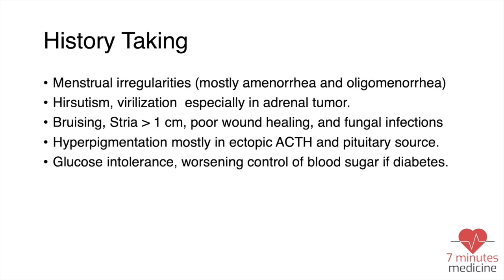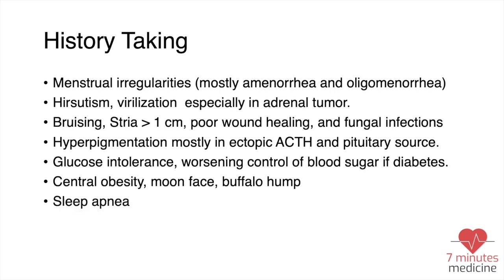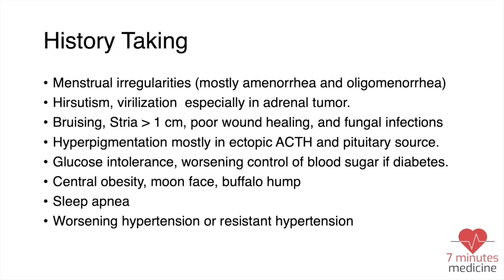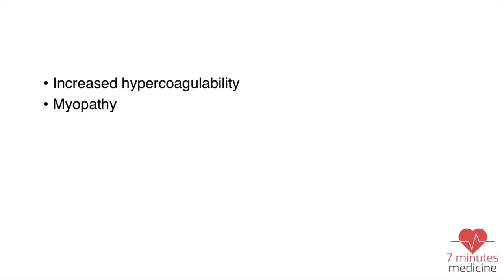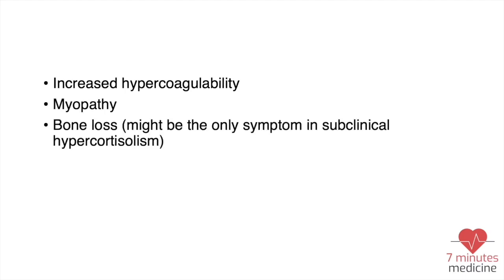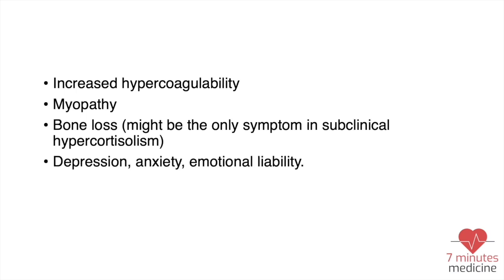They can come with hyperpigmentation, especially in ectopic ACTH. They can also present with poorly controlled blood sugar if they were diabetic, central obesity, moon facies, and buffalo hump — which are the classic symptoms of Cushing syndrome — as well as sleep apnea and worsening or persistent hypertension.